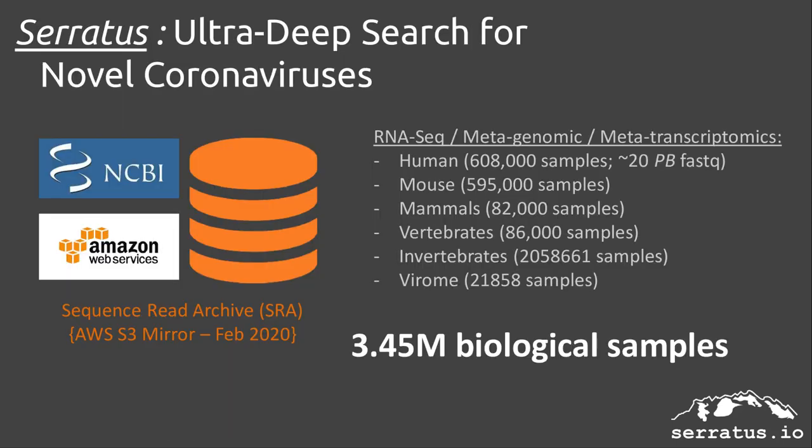To discover new coronavirus sequences, we are re-analyzing all public sequencing data to look for both known and unknown coronaviruses. This is all RNA-seq, metagenomic, and metatranscriptomic data — about 3.4 million biological samples, or over 40 petabytes of uncompressed sequence data.